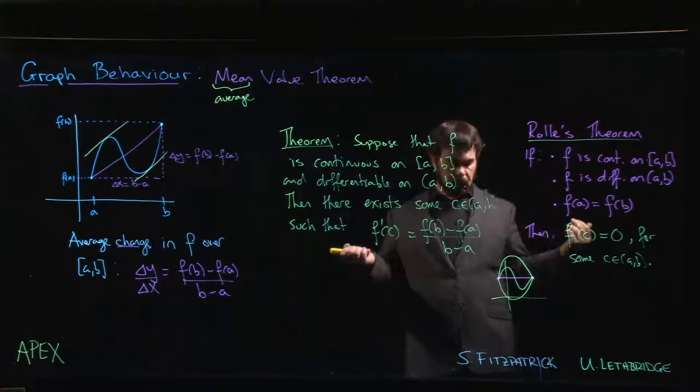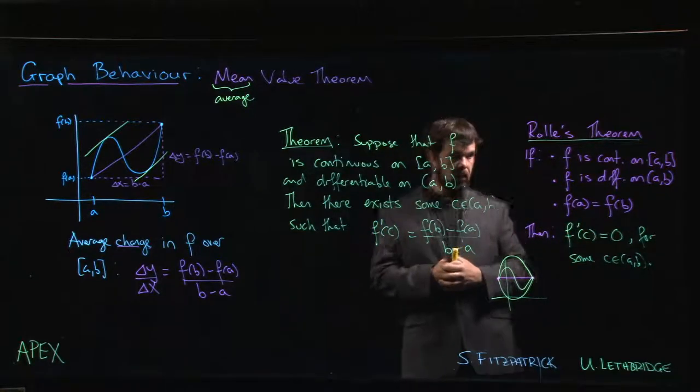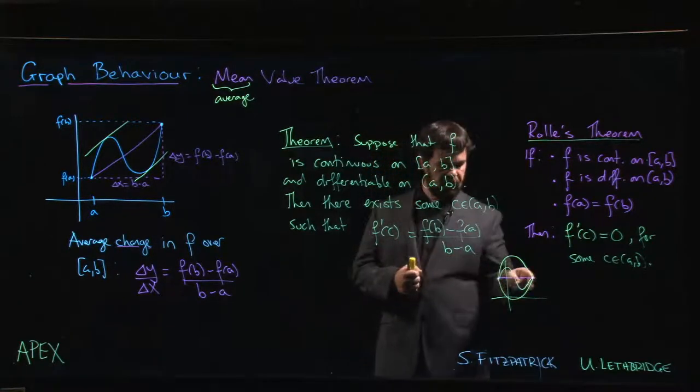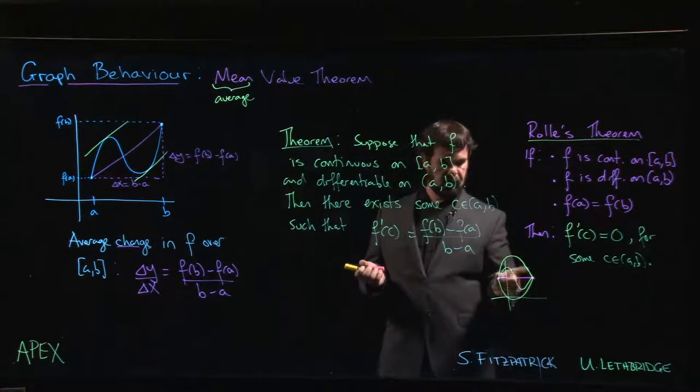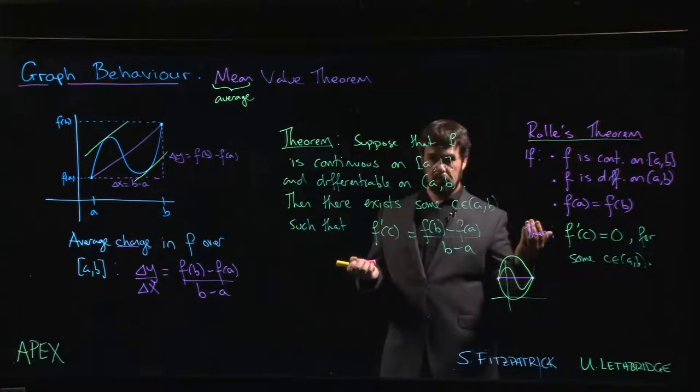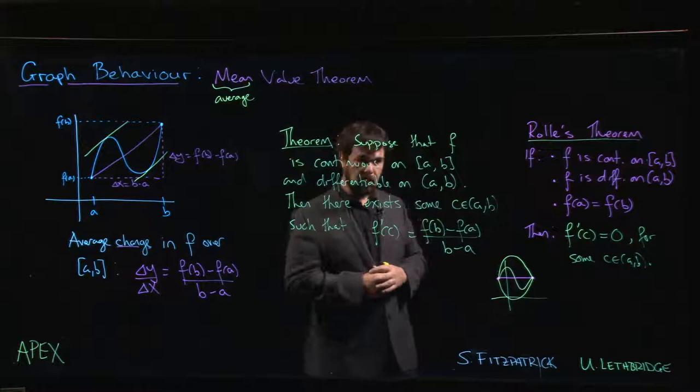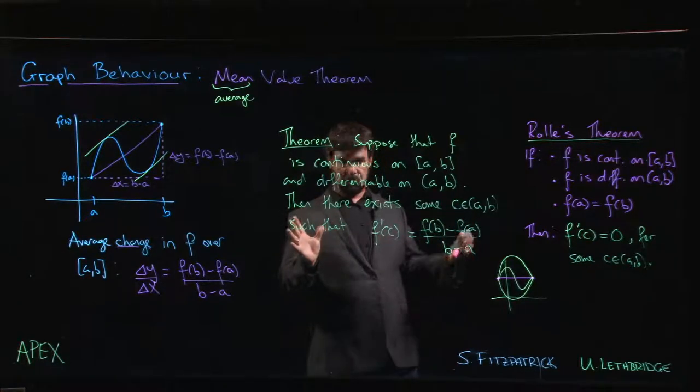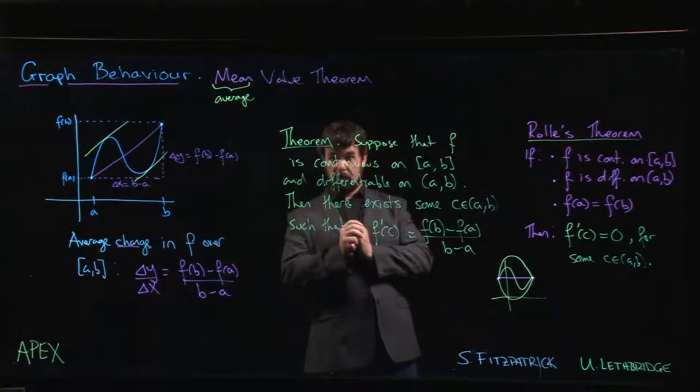So that's why Rolle's Theorem is true. Rolle's Theorem basically says that if your y-value begins and ends at the same point, then somewhere in between you have to have a horizontal tangent. We'll look at one example where we might put Rolle's Theorem to use, and then we're going to prove the Mean Value Theorem.